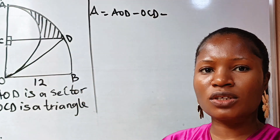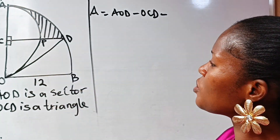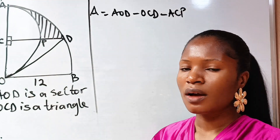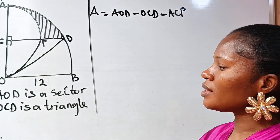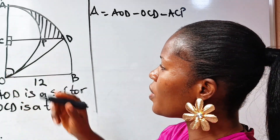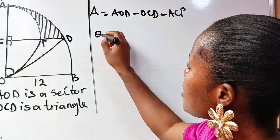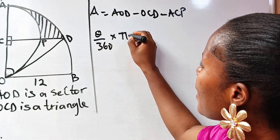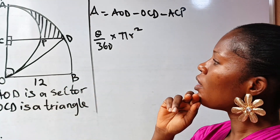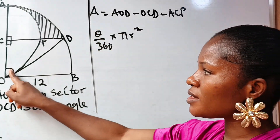This portion is a quadrant of a circle, so we also subtract the quadrant ACP. Now, to get the area of the sector, we need the angle theta, because the area of a sector is theta over 360 times π r². We already know the radius is 12, so we need to find theta.